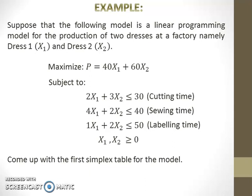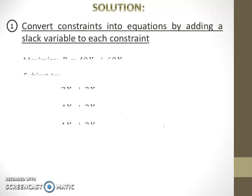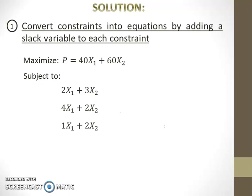To come up with the first simplex table, first convert constraints into equations by adding a slack variable to each constraint. The model has three constraints, thus there will be three slack variables. Add slack 1 to the first constraint, slack 2 to the second constraint, and slack 3 to the third constraint.